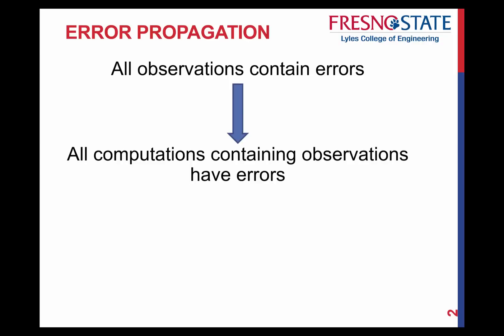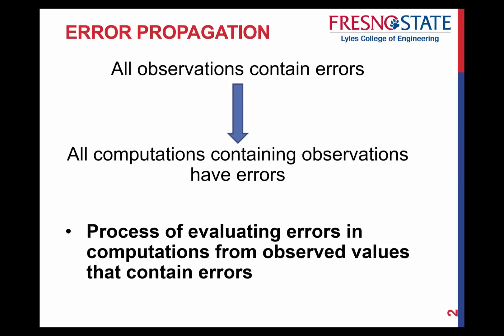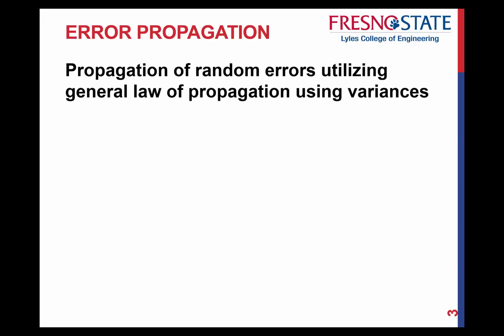Any observations we have are your direct observations, and any computations are your indirect observations. So every observation, direct or indirect, has errors to it. With error propagation, it's the process of evaluating errors in computations from observed values that contain those errors. The error is not explicitly known because we don't know the true value, so through this we're trying to figure out what the total random error is that we can compute.